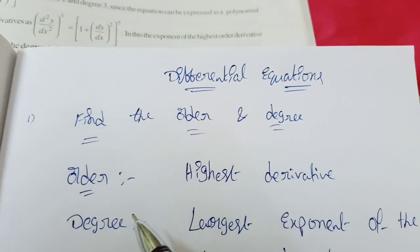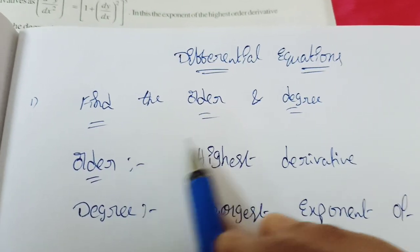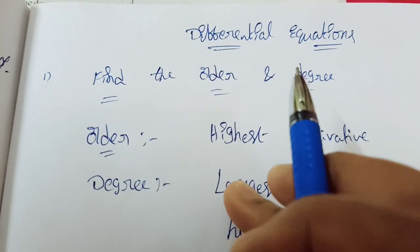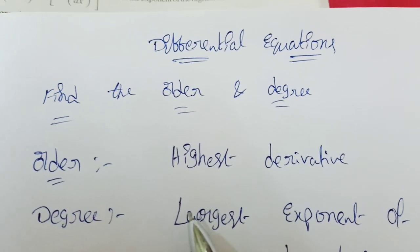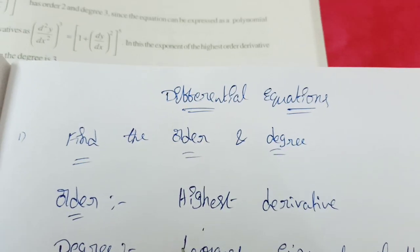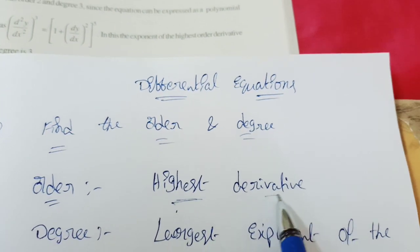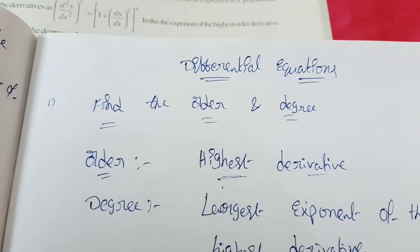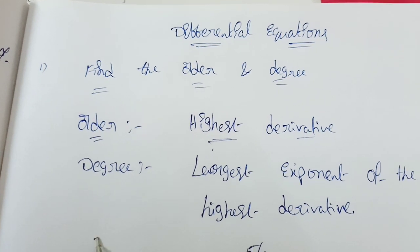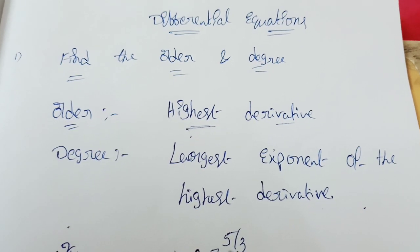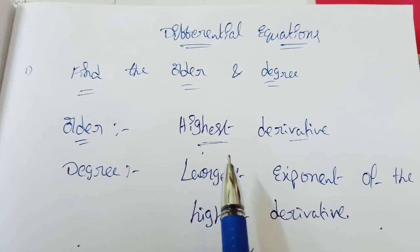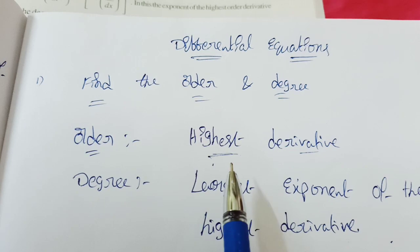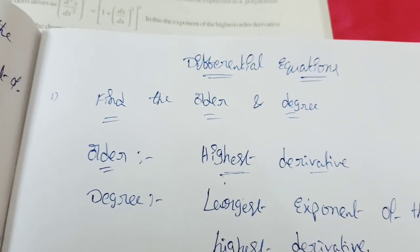What is the order and what is the degree? First, what is the difference between them? Order and degree: order is the highest derivative in this equation — the highest derivative is the order. What is the degree? The degree is the largest exponent of the highest derivative. That power of the highest derivative is the degree.